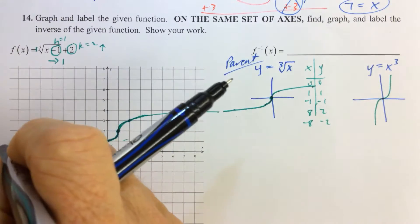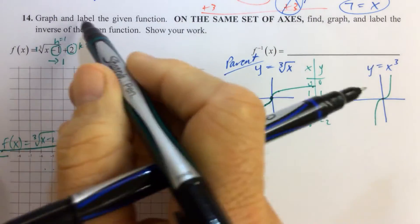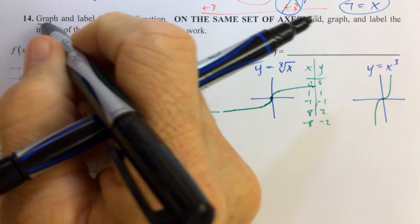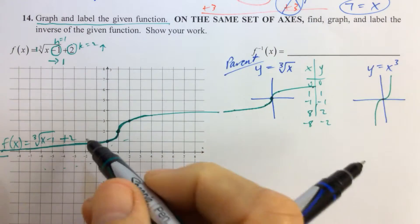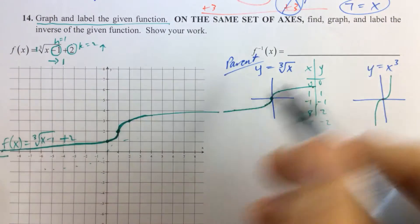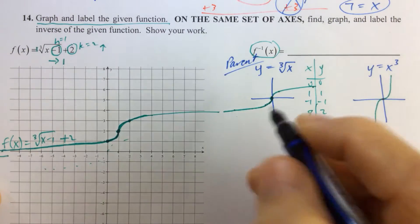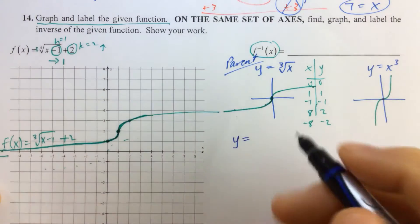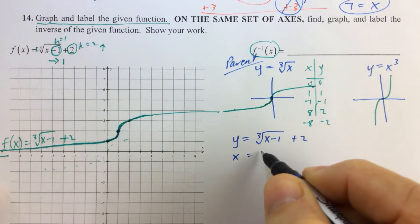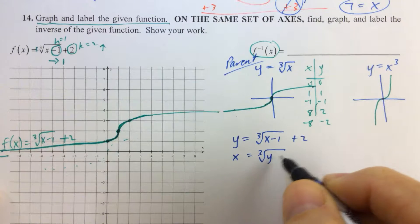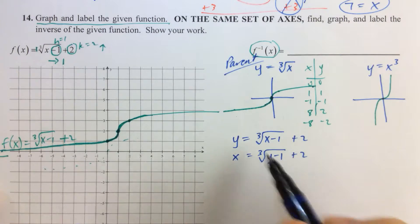So that's the f of x, and we label it f of x equals cube root of (x minus 1) plus 2. Now, on the same set of axes, we need to find, graph, and label the inverse of the given function. The first step is to rewrite the function with y instead of f of x. Then we interchange x and y — reversing the roles. Now we solve for y, and that's going to be our inverse of f of x.